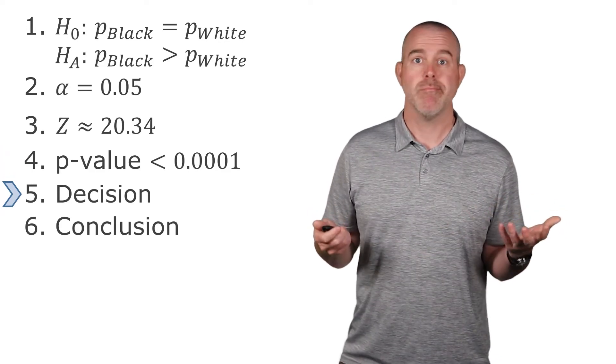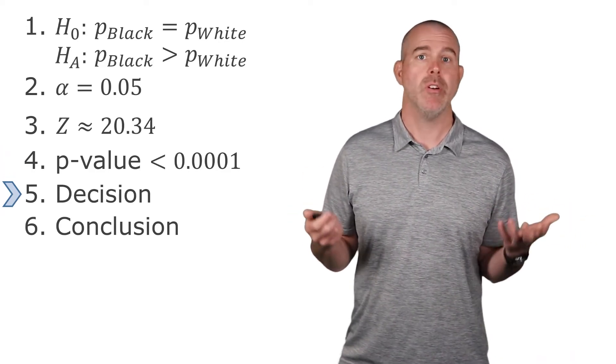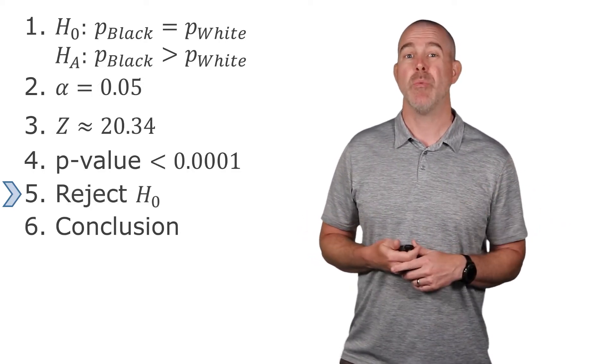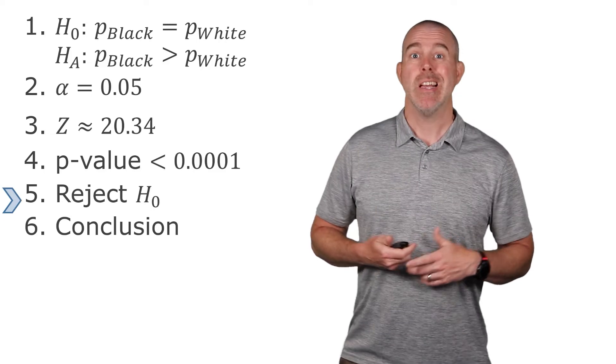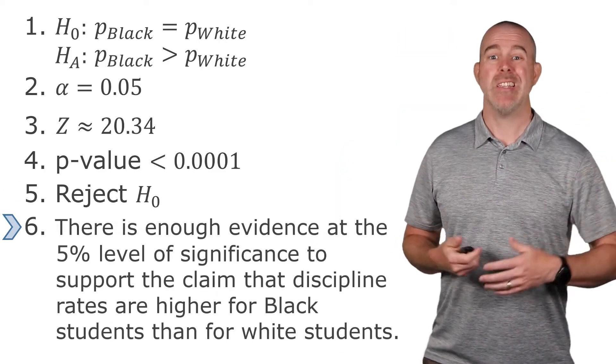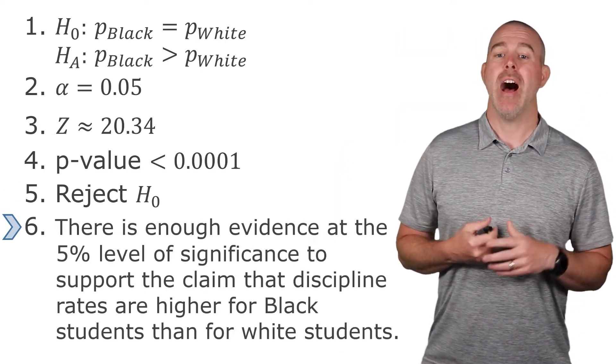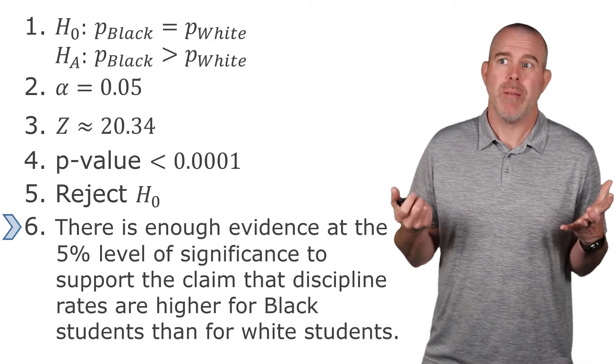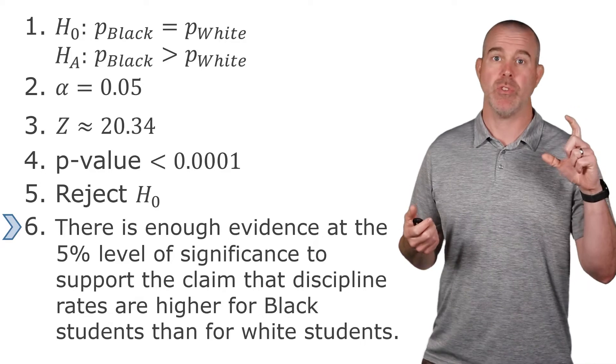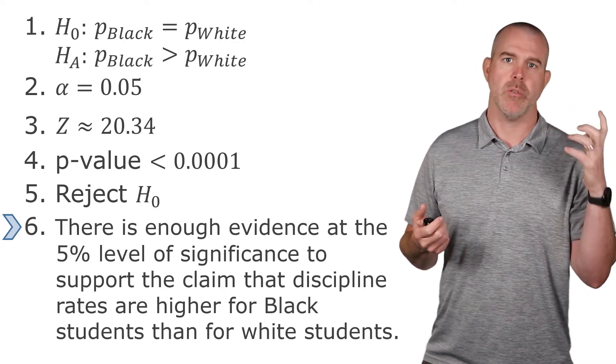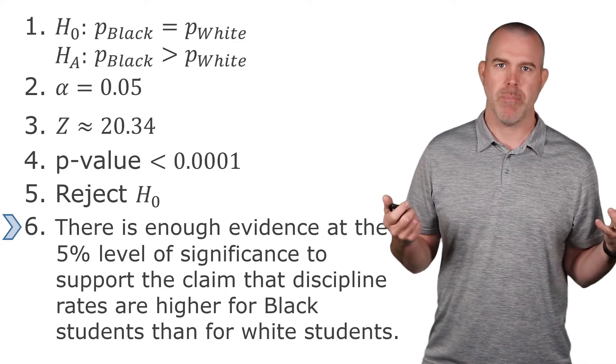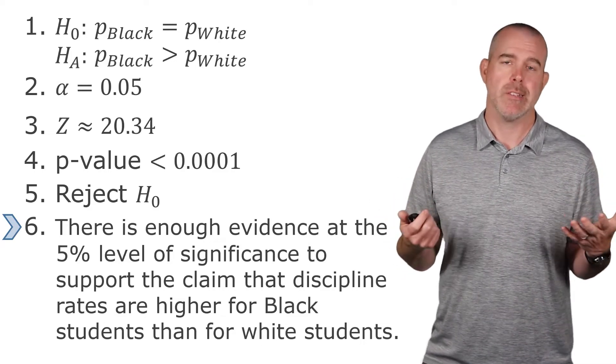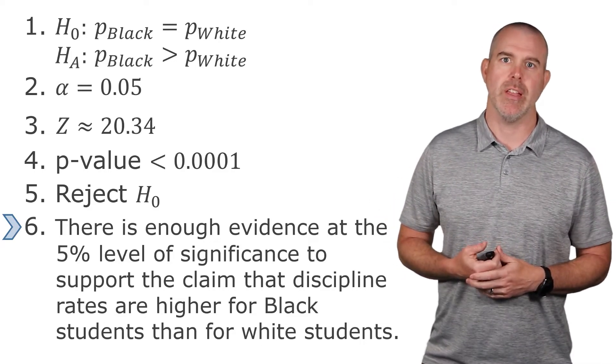Our decision then, we got a super small p value, a really large test statistic. So we are going to clearly reject the null hypothesis. So that means there is enough evidence to support the claim that the discipline rates are higher for black students. And that should have been pretty obvious because the difference was really large to begin with. So with those sample sizes, it shouldn't be shocking that our test would show, yes, there is a statistically significant difference.